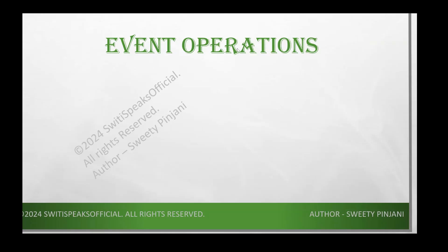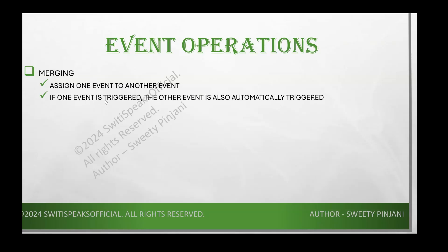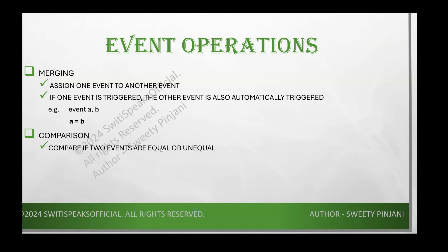What operations can be performed on events? The first is merging — you can merge two events by assigning one event to another. If event A is assigned to event B (A = B), then whenever B is triggered, A will also automatically be triggered. The second operation is comparison — checking if two events are equal or unequal using equality operators. For example, A == B checks if both events are equal, and A != B checks if they are not equal.